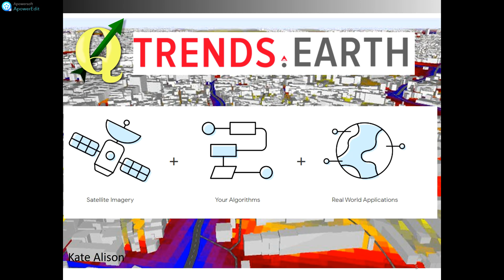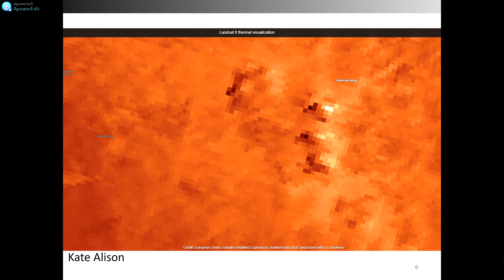In this course, we are going to work with QGIS and Trends.Earth Plugin. These tools provide easy web-based access to an extensive catalog of satellite imagery and other geospatial data in analysis-ready format.